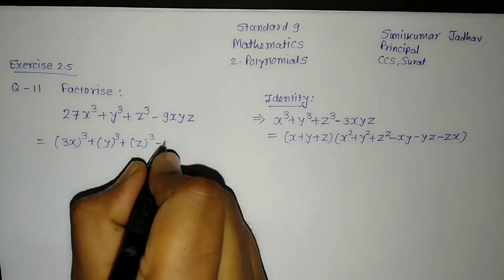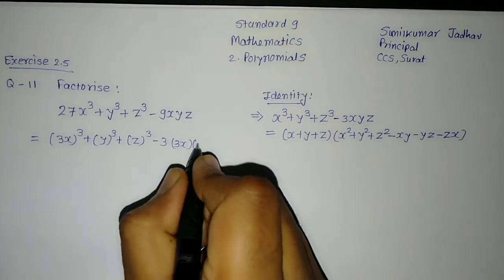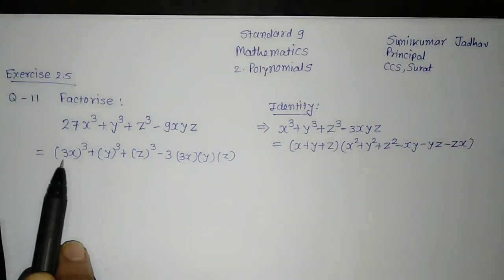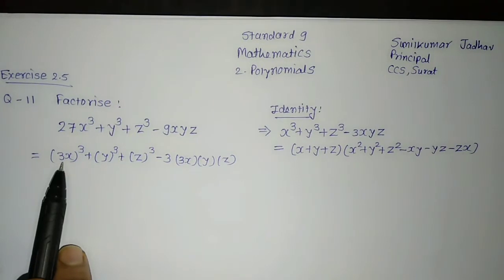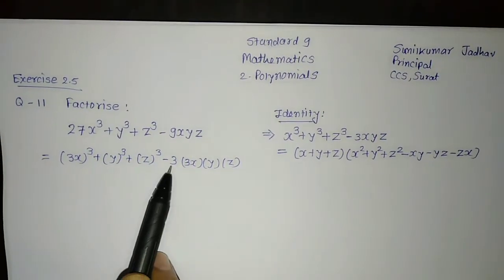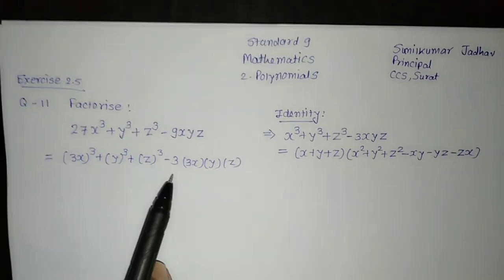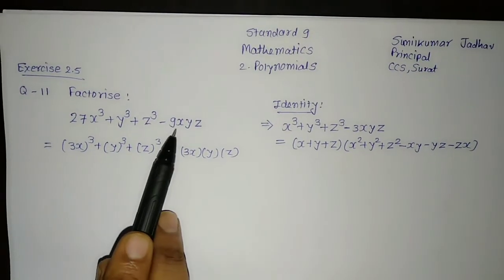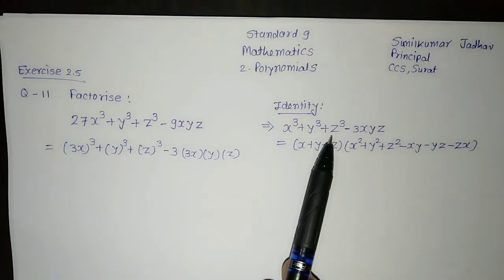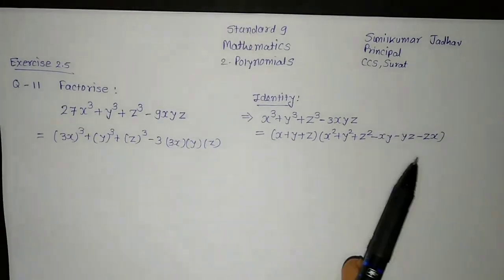Our first term is 3x, second term is y, and third term is z. Let us verify: 3³ equals 27, so (3x)³ gives us 27x³. And 3 times 3x times y times z gives 9xyz — which matches the minus 9xyz term. So we have successfully written the expression in the form x³ plus y³ plus z³ minus 3xyz, and we can apply the identity formula.